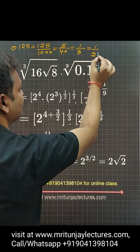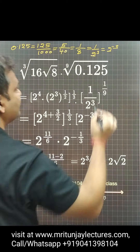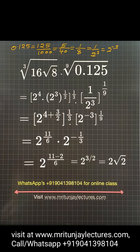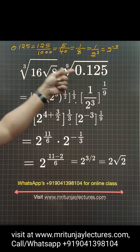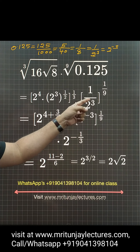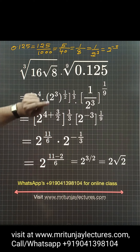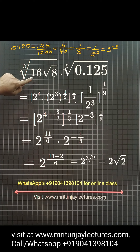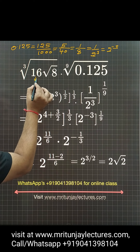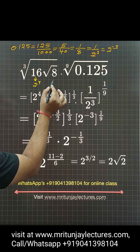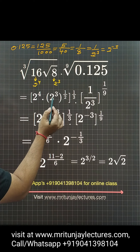That simplifies to 2 to power minus 3. So that value is basically 1 by 2 to power cube, to whole power 1 by 9. Now 16 is also written as 2 to power 4, and 8 is 2 to power 3.